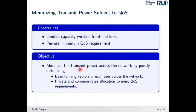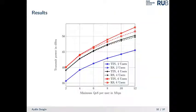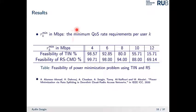Another problem we looked at was minimizing the overall transmit power across the network. When looking at transmit power as a function of minimum quality of service per user in megabits per second, as the number of users increases, the performance of rate splitting over TIN becomes better and better. More interestingly, when considering the feasibility at increasing minimum QoS rate requirements, while feasibility is comparable at low rates, at higher rates the feasibility level of rate splitting is significantly higher than that of TIN.